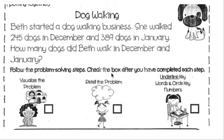So we are going to visualize the problem and then retell the problem. So while I'm reading the problem for the second time, I want you to visualize in your head. Beth started a dog walking business. She walked 245 dogs in December and 389 dogs in January. How many dogs did Beth walk in December and January? So if you visualize that, you can go ahead and put a check.